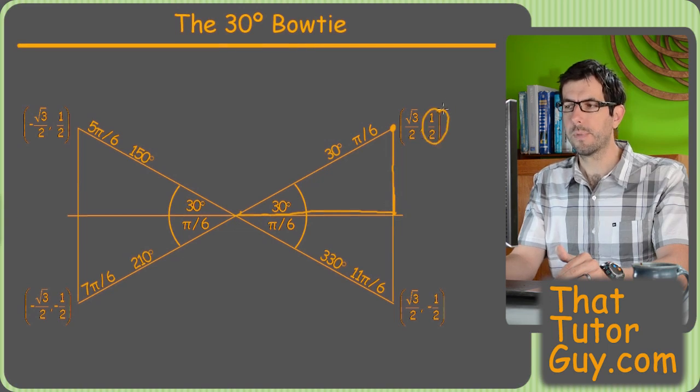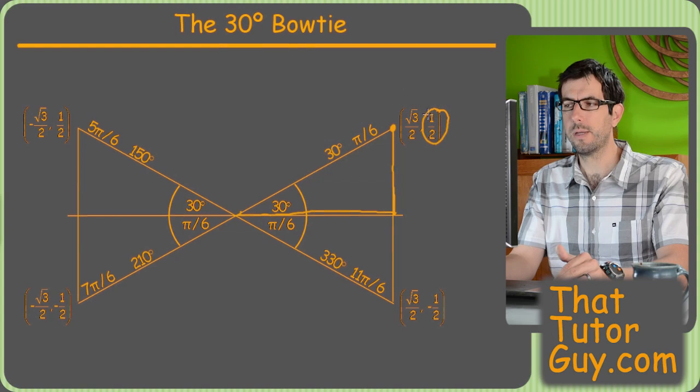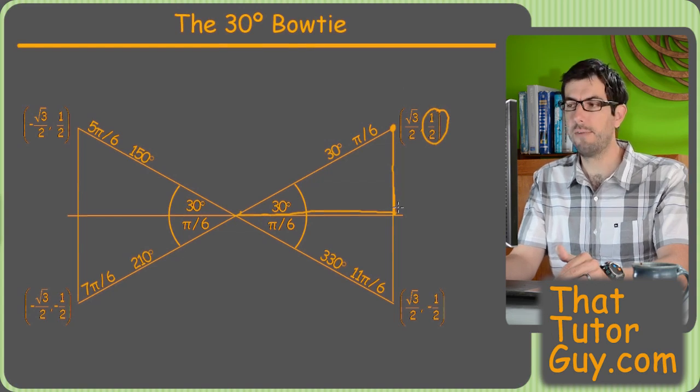So, that must be the 1 half, because root 3 over 2 is .866 something, whereas 1 half is just .5. So, the smaller side is going to be the 1 half.